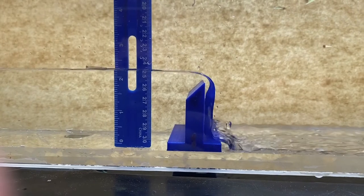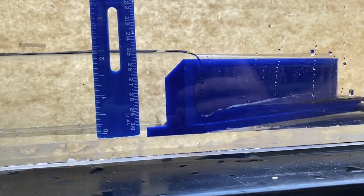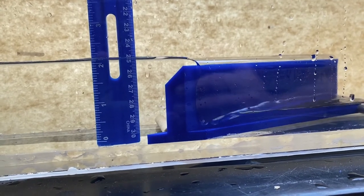We also tried reversing the direction of the crest of the weir to see if that would change the water level. But there was not enough accuracy in our system to determine if that was a factor.